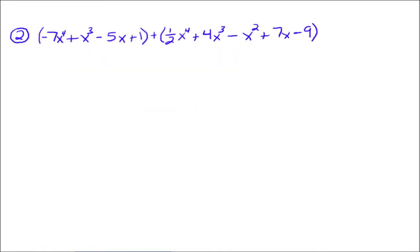Let's try a second one. Here we're going to add up these two polynomials. A little longer, but still we have to combine like terms. We've got a negative 7x to the fourth here and a 1 half x to the fourth there, so we need to combine those. The question is, how do you add negative 7 and 1 half? You have to go over and add the fractions together. So negative 7 is the same thing as negative 14 halves.